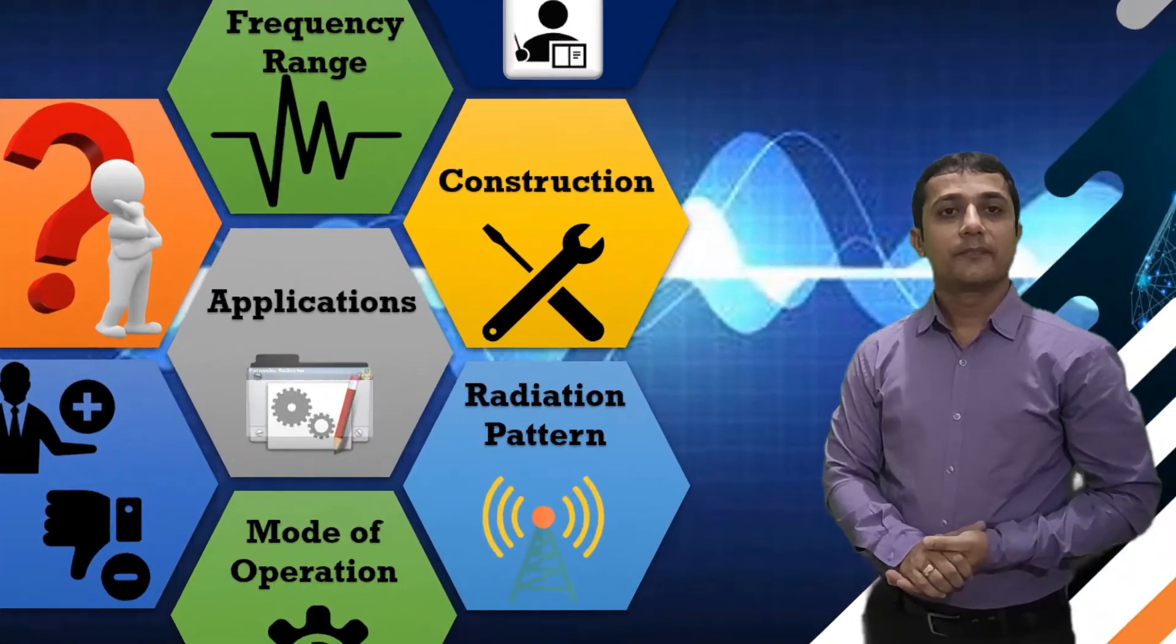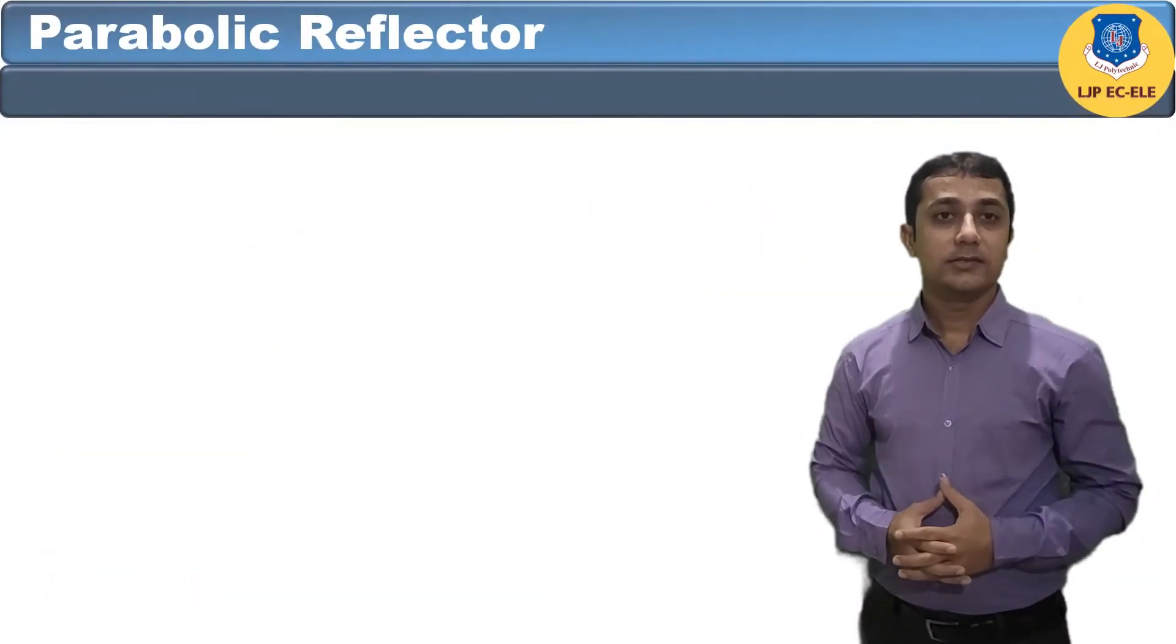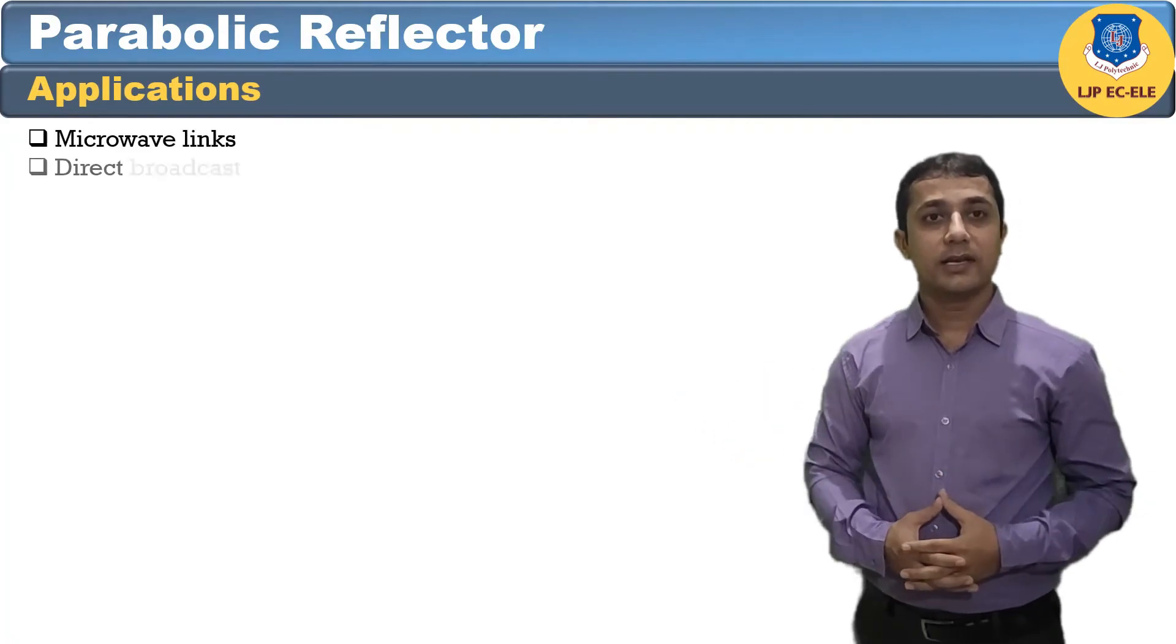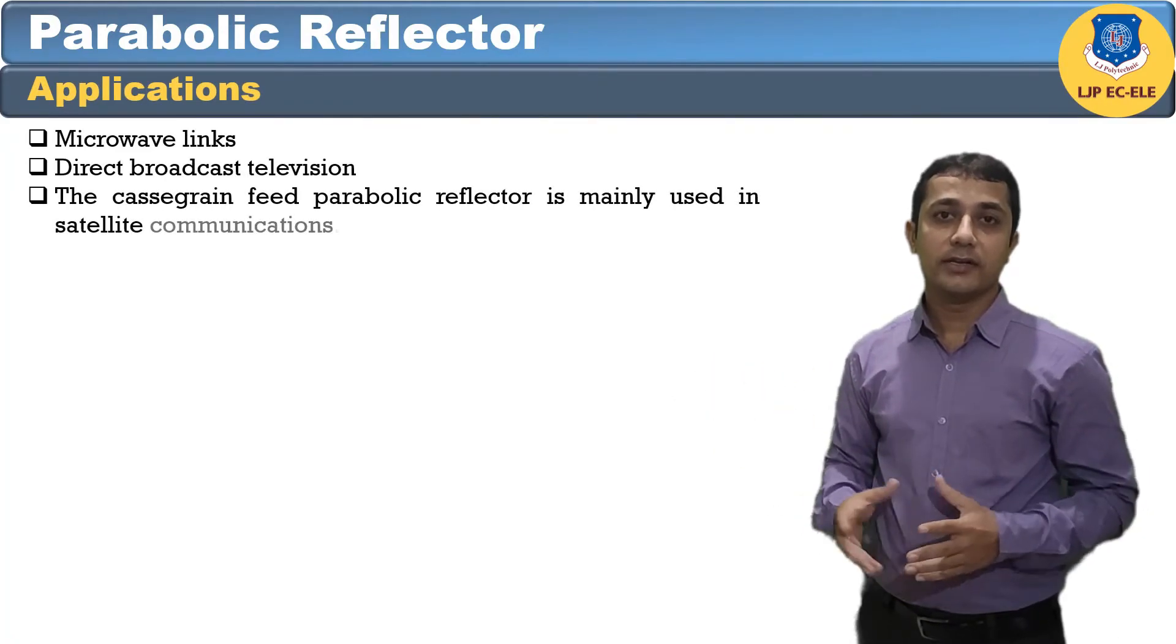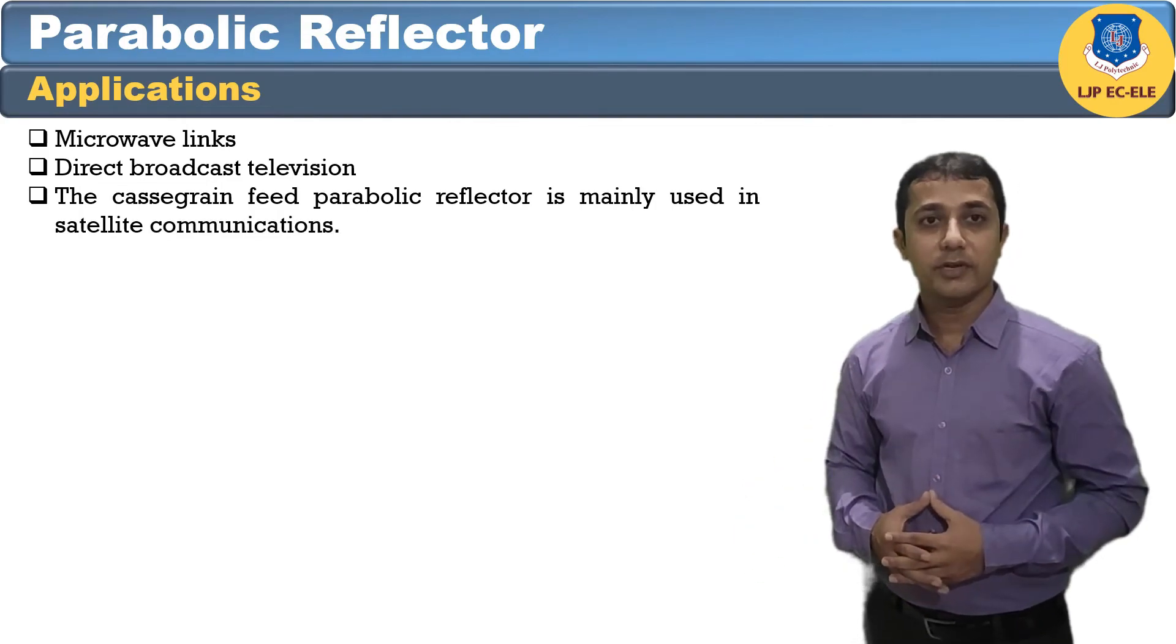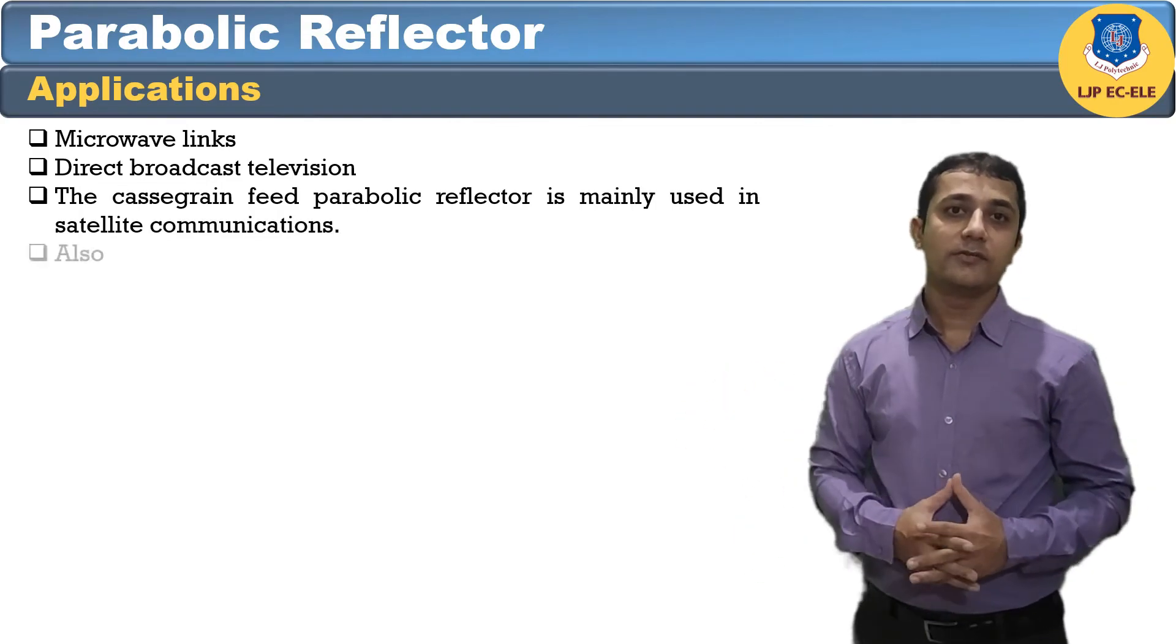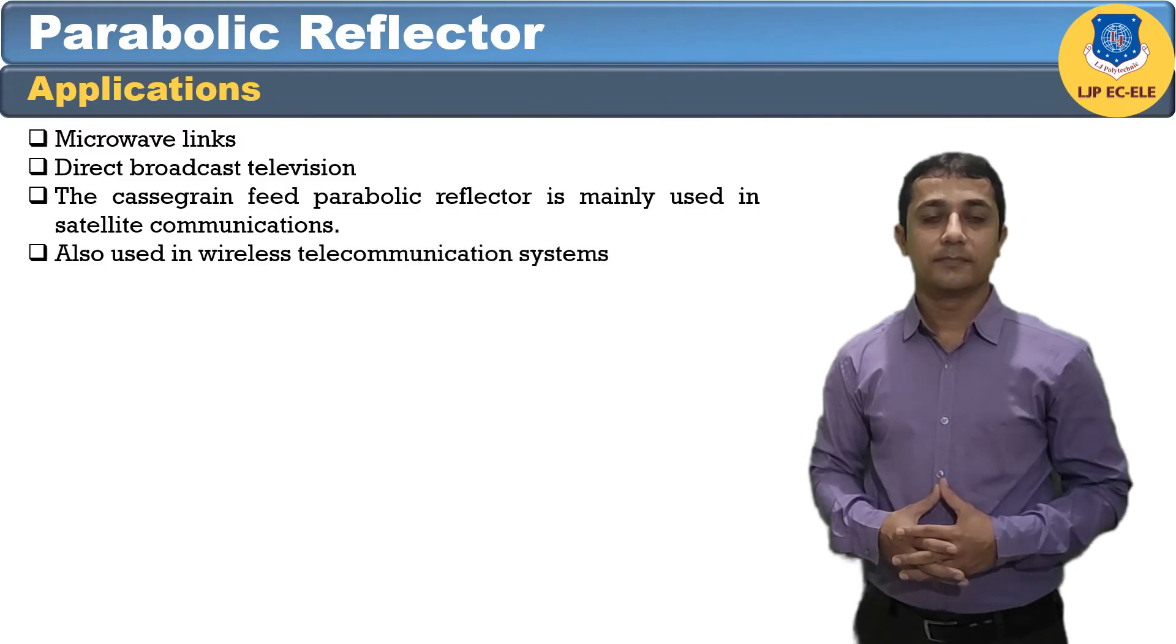Now let us see the applications. First is microwave links. Direct broadcast television. The Cassegrain feed parabolic reflector is mainly used in satellite communication and also used in wireless telecommunication systems.